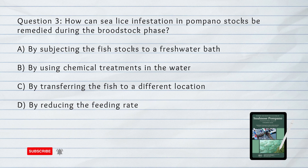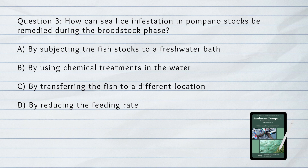Number 3. How can sea lice infestation in pompano stocks be remedied during the broodstock phase? A. By subjecting the fish stocks to a freshwater bath. B. By using chemical treatments in the water. C. By transferring the fish to a different location. D. By reducing the feeding rate.